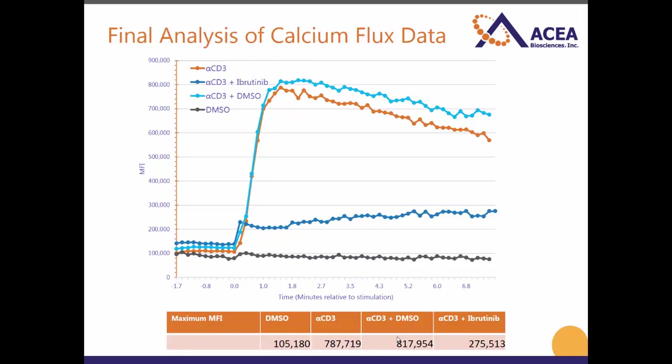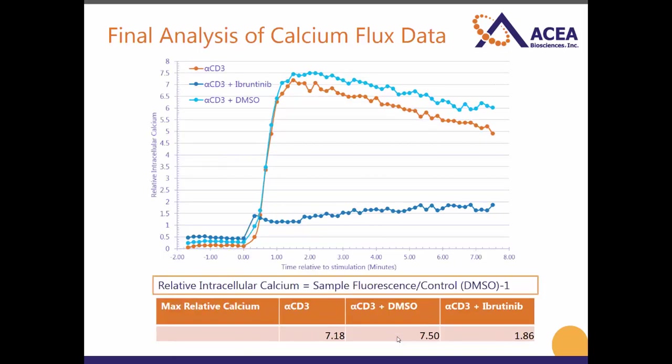Below is a table with the maximum fluorescence of each sample which allows you to evaluate the peak response. Another way to analyze your data is by calculating the relative intracellular calcium levels, which is the fluorescence of the sample of interest normalized to the untreated control. In this experiment it was a sample that was treated only with DMSO and no CD3. This allows you to see the fold increase in fluorescence due to the addition of CD3 antibody and evaluate the different peak responses between samples. As you can see, the cells that are pre-treated with ibrutinib decrease in their capability to respond to CD3 antibody more than seven-fold.